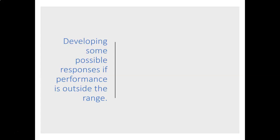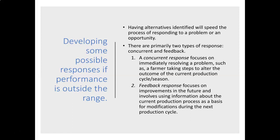Developing some possible responses if performance is outside the range. Identifying alternatives helps speed up the process of responding to a problem or an opportunity. There are primarily two types of response: concurrent and feedback. A concurrent response focuses on immediately resolving a problem, such as a farmer taking steps to alter the outcome of the current production cycle or season. A feedback response focuses on improvements in the future and involves using information about the current production process as a basis for modifications during the next production process.